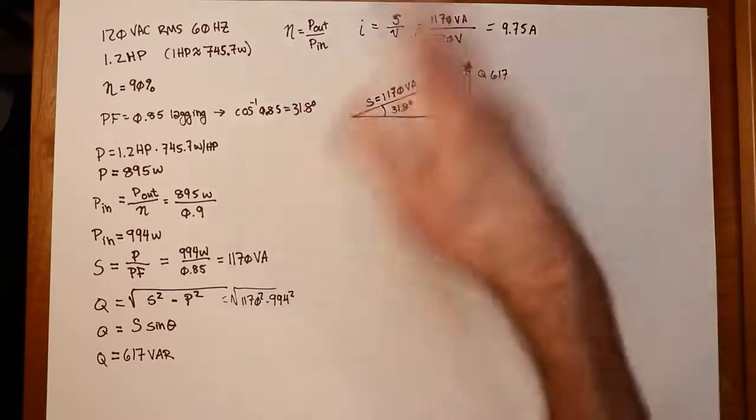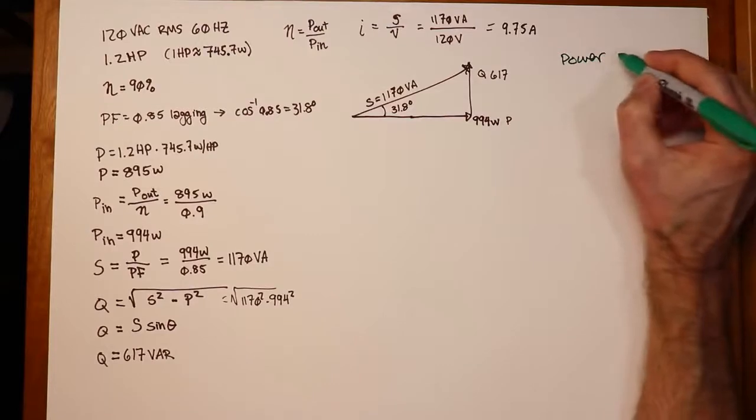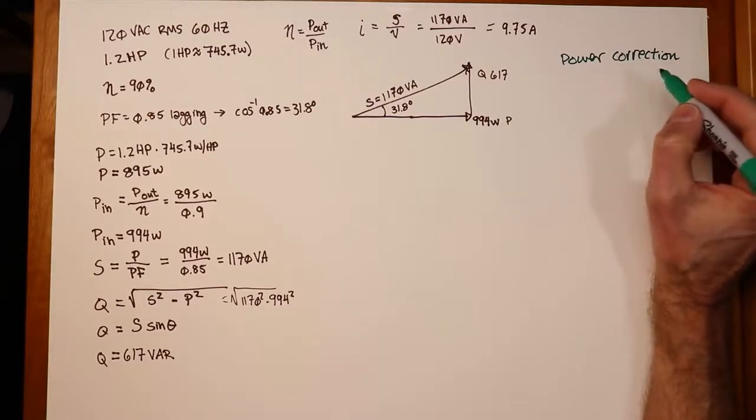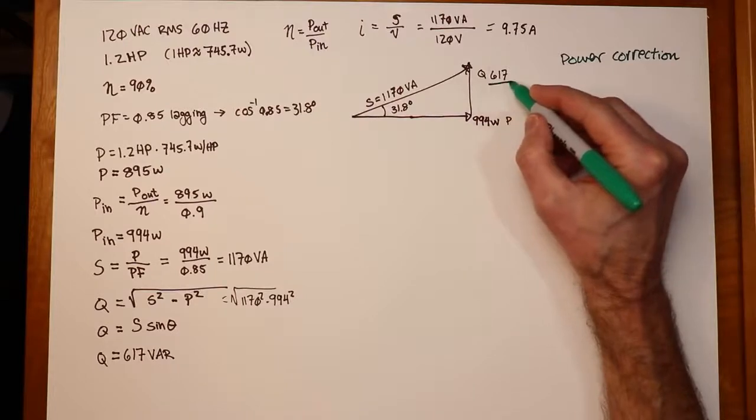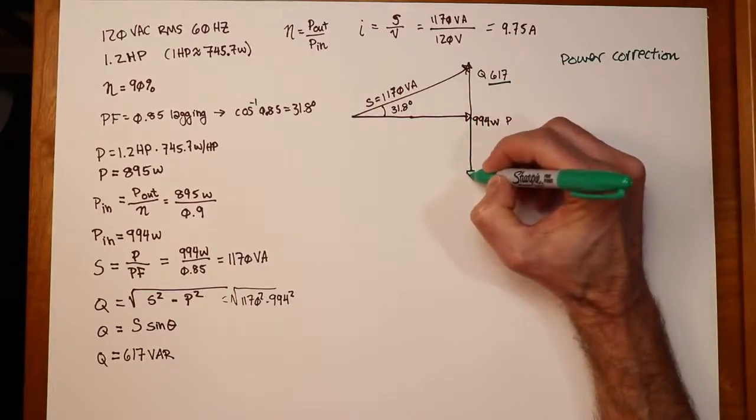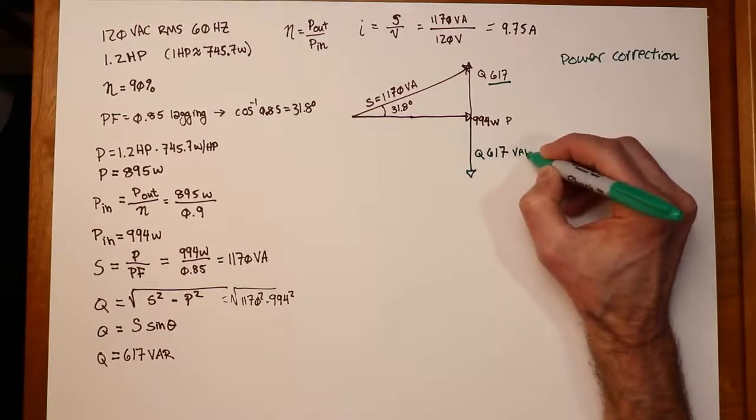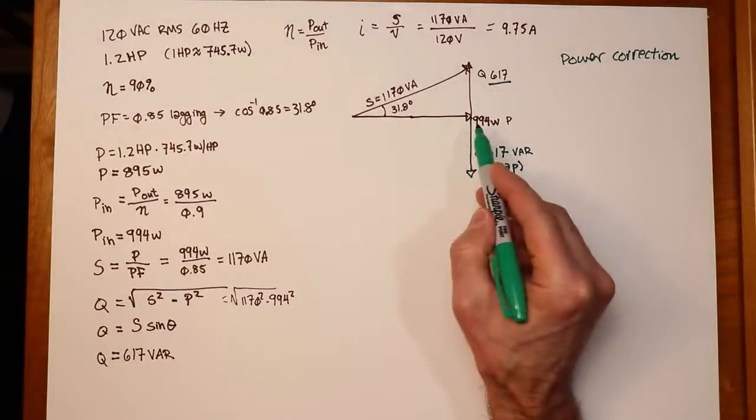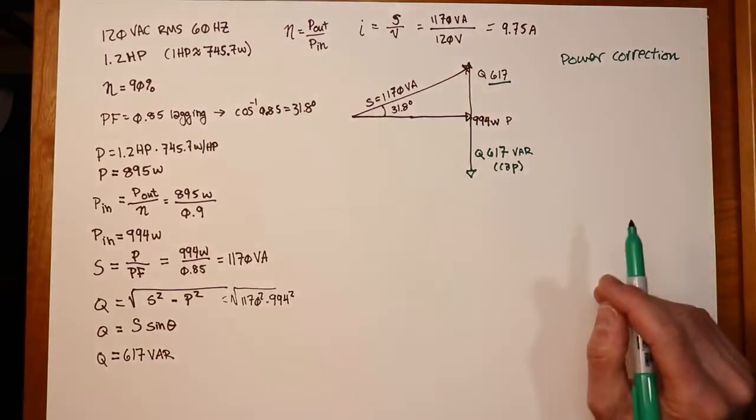Now, that sort of completes this situation. At the close of the prior video, we had mentioned that we could do power factor correction. Power factor correction. The idea here was to reduce the current draw. So the power factor correction, the idea here, would be to introduce a Q value that's the same magnitude, but in the opposite direction. In other words, I want to introduce a Q that's capacitive, but also equal to 617 var. Just capacitive this time. So this and this will cancel out. S will collapse down onto the P vector. In other words, S will be 994 volt amps or watts. It would be the same thing at that point.